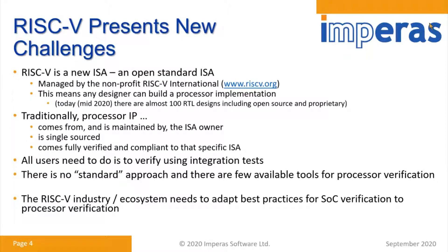A fundamental thing we all have to understand is that RISC-V presents new challenges. It's a new ISA, and the key thing is it's an open standard ISA. What that means is that any designer can build a processor implementation. If we look at the RISC-V.org website, we can see there are over 100 RTL designs already out there, whether proprietary or open source, based around this open standard ISA.